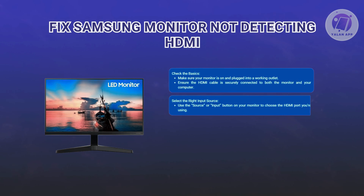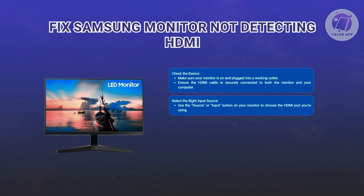Next, you want to select the right input source. Sometimes the monitor needs to be manually set to the correct HDMI input. Look for a button on the monitor that says Source or Input, then press it to cycle through the available options until you find the HDMI port you're using.